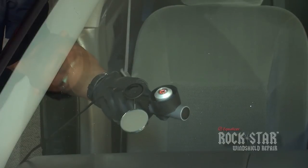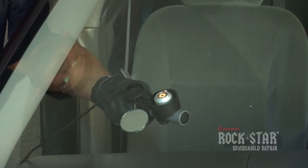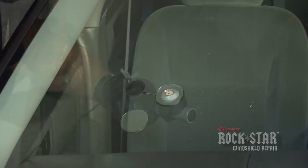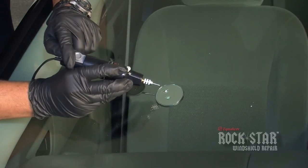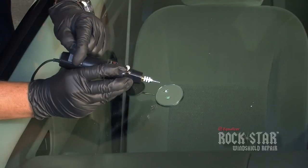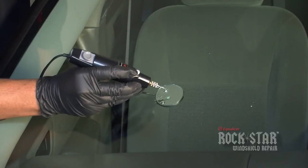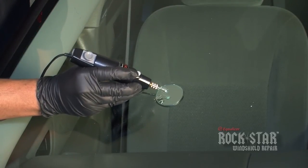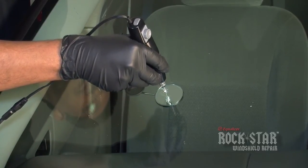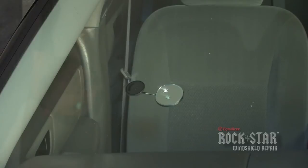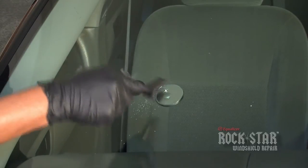If moisture is present in the break, dry out by using the windshield chip moisture evaporator. If the rock chip area is not open, consider drilling the chip. At a slow setting, start to drill into the glass. Be careful not to drill into the polyvinyl butyral or PVB. Brush away the debris from the rock chip.